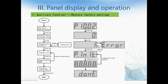Another function we often use is restore factory settings. First, we access the P10.2 parameter. We press Enter, then use the up key to change the value to 1, then press Enter again. Then we hold the Enter key for three seconds. It will display 'DONE', meaning we have restored factory settings successfully.